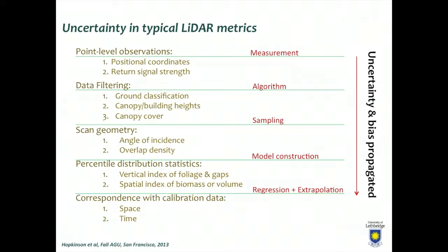We then start taking this point cloud and doing stuff with it. Typically the kind of stuff we do first is filtering the data — that could be ground classification, extracting building heights, or canopy cover. We apply filtering algorithms to the data, but there's a lot of subjectivity in the parameters used, what type of algorithm, or how that algorithm is implemented. At that stage, uncertainty is introduced into your model.